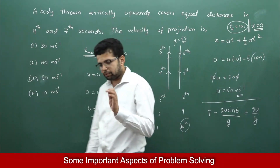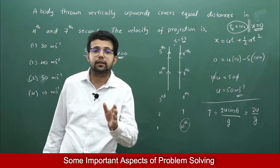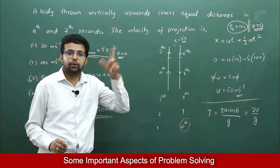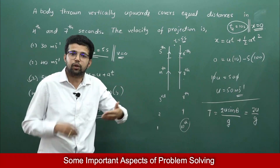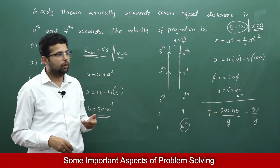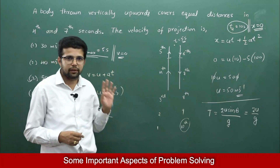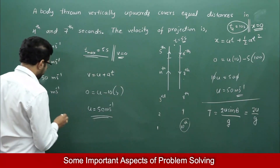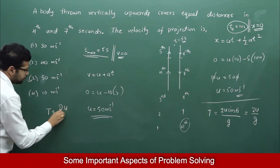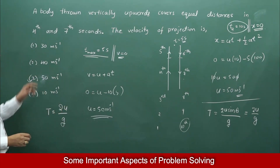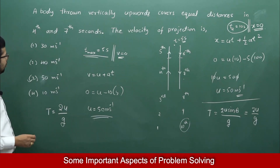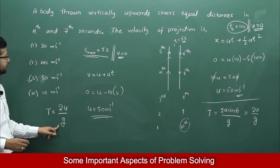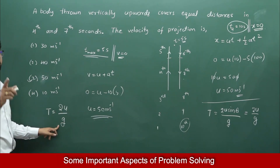Looking at the problem, we know the time of flight is greater than 7 seconds, because during the 4th second and the 7th second the object is still moving. So time of flight must be greater than 7 seconds. Taking the first option, U = 30: 2×30/10 = 6 seconds — but 6 is not greater than 7, so this cannot be the answer.